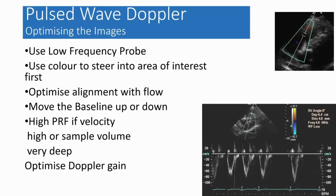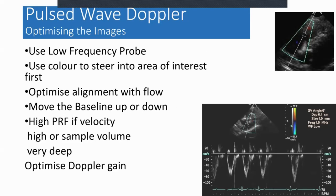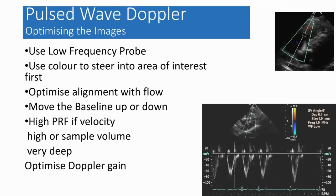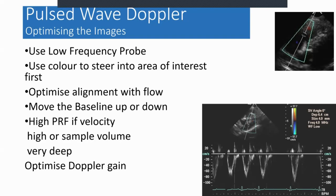To optimise your pulse wave Doppler image: a lower frequency probe will allow you to interrogate higher velocities. Use your colour flow to steer into the area of interest. Optimise alignment with flow — within 15 degrees of actual flow alignment. Then move your baseline up or down depending on whether flow is towards or away from the probe. Change the scale or increase pulse repetition frequency if velocity is too high or if the sample volume is too deep. Once you've got your spectral display, optimise your Doppler gain to clean up image quality.